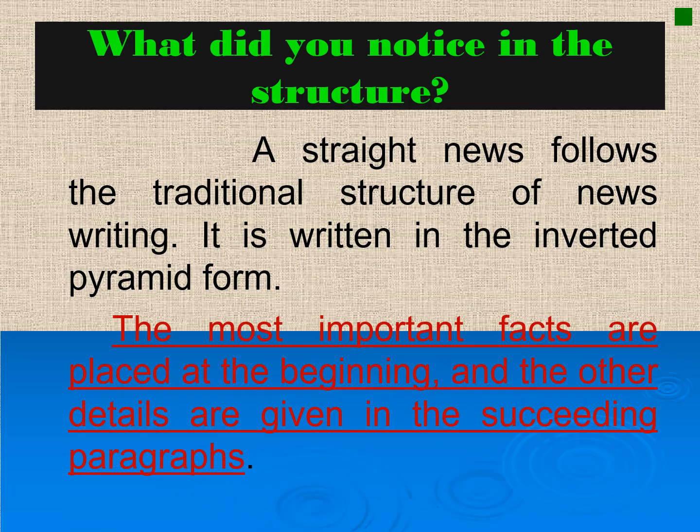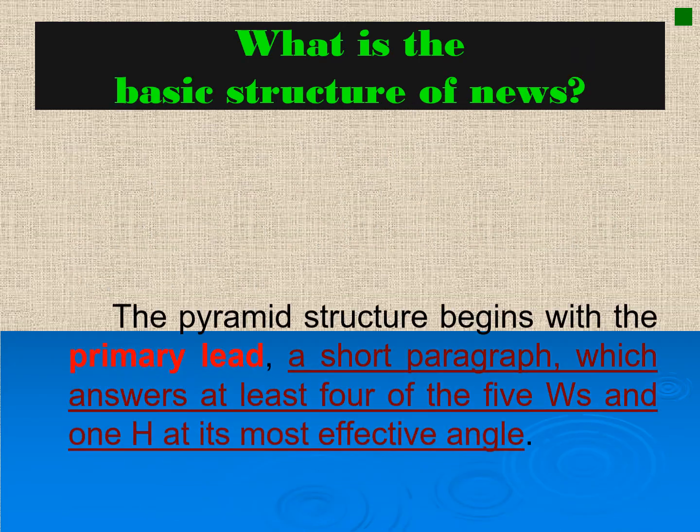The most important facts are placed at the beginning, and the other details are given in the succeeding paragraphs. You notice in the example that the most important fact is that there was a 10-year-old girl who escaped successfully from three bears. The details are given in the succeeding paragraphs, and because it was based on a children's story, the narration was done chronologically — what happened first is presented first, then what happened next, and so forth.